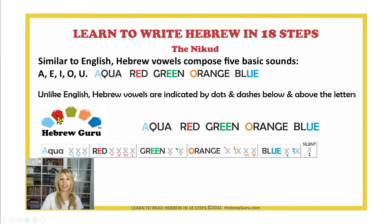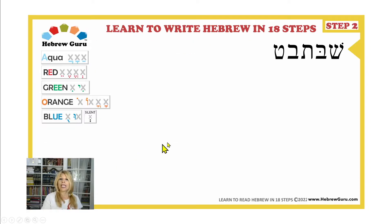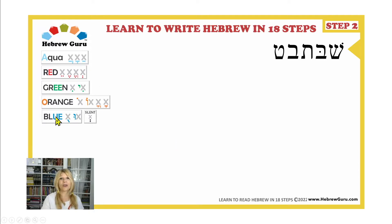A as in aqua, E as in red, E as in green, O as in orange, and U as in blue. A, E, E, O, U. In this step, step number two, we have the vowels on the left-hand side because we are going to use them when we learn keywords.